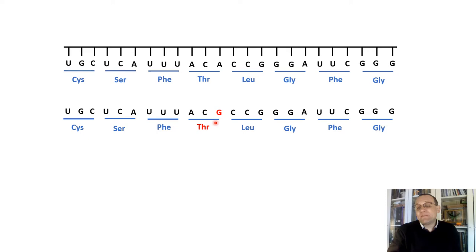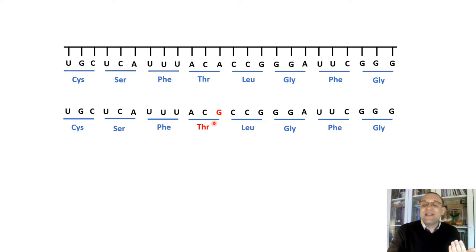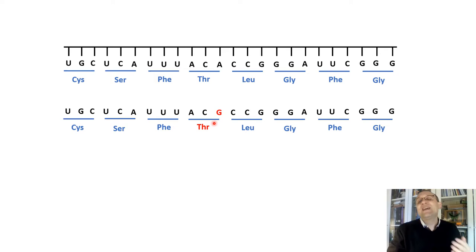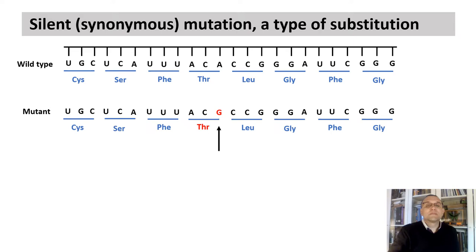So even though the mutation happened, the amino acid is still the same. We call this type of mutation a silent mutation, also known as a synonymous mutation — from the word synonym. In contrast, the missense mutation we looked at before is a non-synonymous mutation. Synonymous mutations are actually fairly common, but since they have no effect they are not noticed.